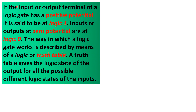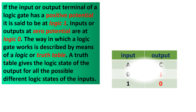If the input or output terminal of a logic gate has a positive potential, it is said to be at logic 1 or high voltage. Inputs or outputs at zero potential are at logic 0, meaning low voltage. The way in which a logic gate works is described by means of a logic or truth table. A truth table gives the logic state of the output for all the possible different logic states of the inputs.